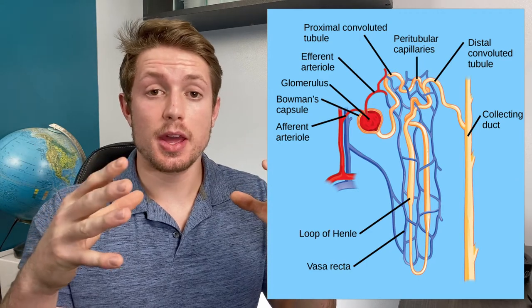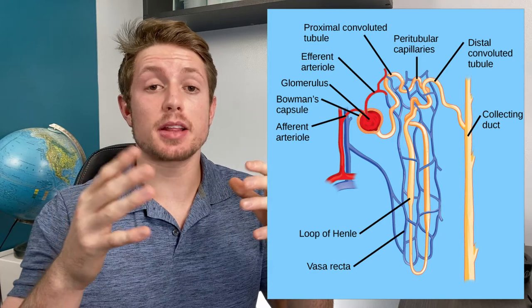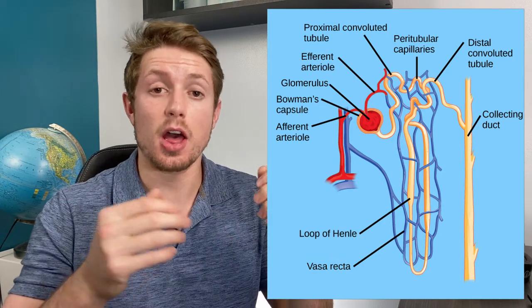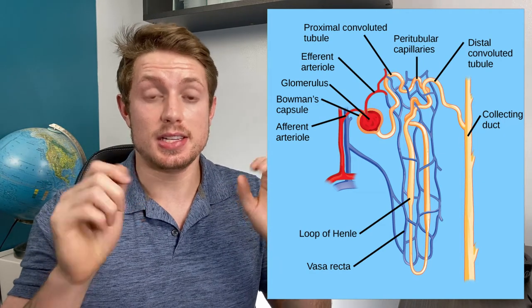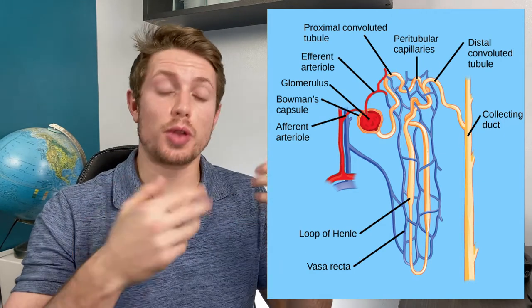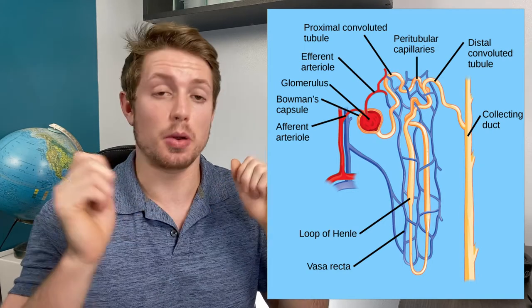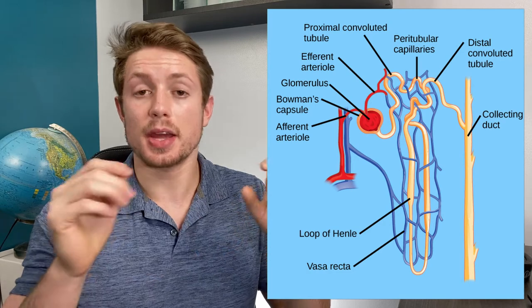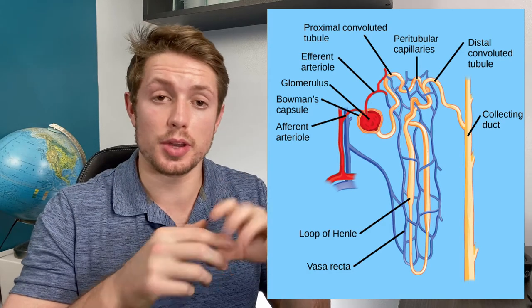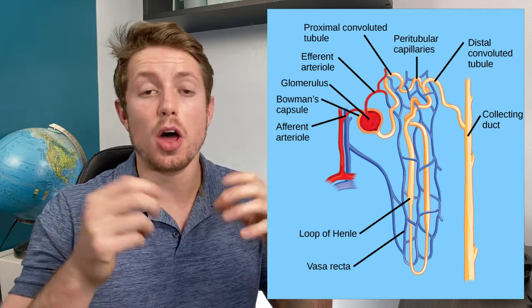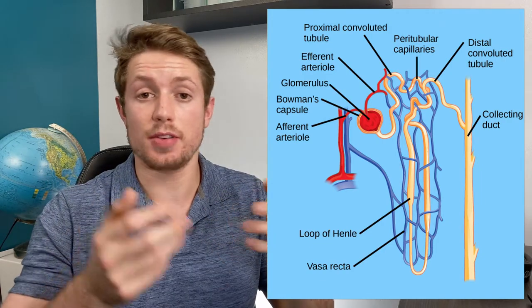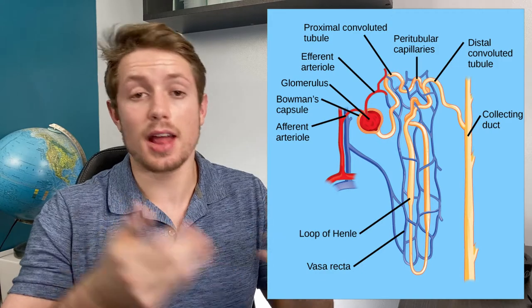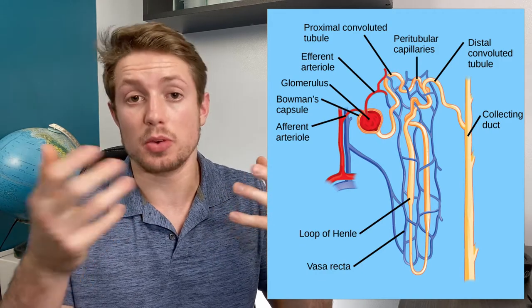So inside this Bowman's capsule is filtrate. And that is basically almost everything in the blood besides red blood cells. There's some things that aren't filtered, but basically the general strategy of the kidney is to filter everything and then reabsorb stuff that we actually need to keep. So a ton of stuff is shoved out into this Bowman's capsule and it starts going through a tubule network. First, it comes into the proximal convoluted tubule where a vast majority of this stuff is reabsorbed. So a ton of glucose, salt and ions, and a lot of water is sucked back in through the proximal convoluted tubule.